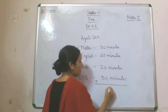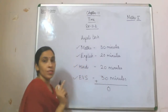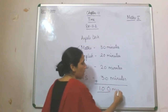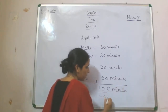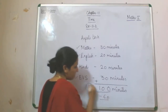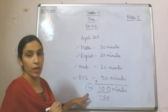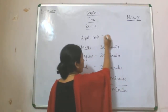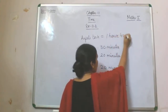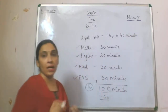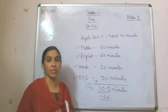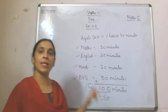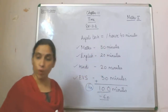You will do the addition: 30 plus 20 plus 20 plus 30 gives 100 minutes. Out of these 100 minutes, you can take 60 minutes to make 1 hour. 100 minus 60 leaves 40 minutes. So it means Anjali took 1 hour 40 minutes to complete her work. After doing addition, we took 60 minutes from the minutes part, and that 60 minutes is equal to 1 hour, so that becomes 1 hour 40 minutes.